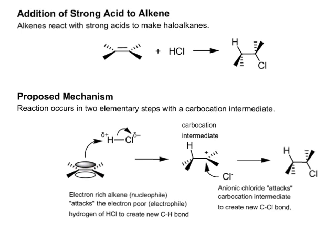Here's how the procedure is believed to occur. I have my electron-rich alkene, and this is going to be called a nucleophile. Then I have my electron-poor H-plus of HCl, which is called an electrophile. The ending '-phile' refers to love, so I have an electron-lover and a nucleus-lover. The electron-rich region of the carbon-carbon double bond is going to attack the H-plus of HCl.